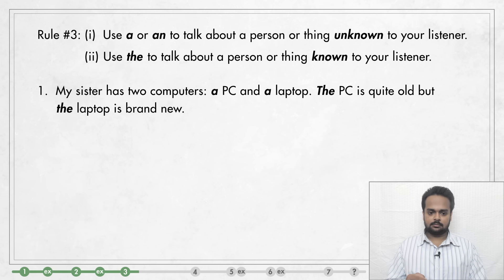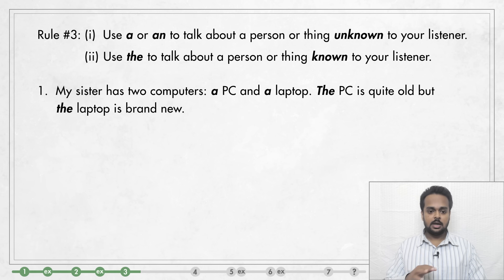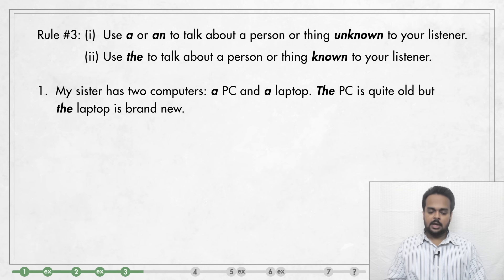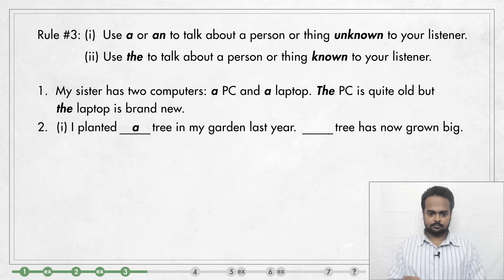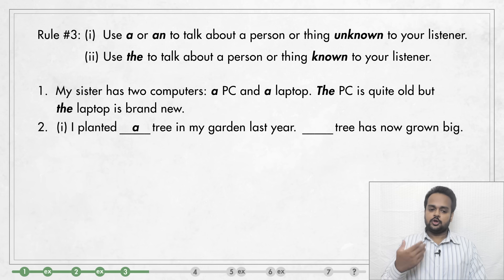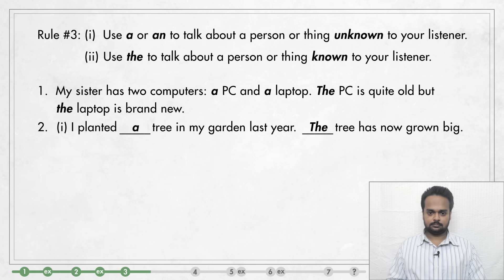In English, A and AN are called indefinite articles because they talk about something that the listener doesn't know about. And THE is called the definite article because the listener knows what you are referring to. Here's another example — can you fill in the gaps? The first time I mention my tree, I'm going to say 'a tree.' So: I planted a tree in my garden last year. Now you know about the tree, so I can say: The tree has now grown big.